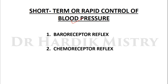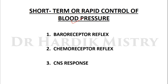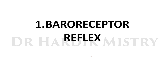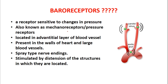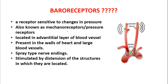In the short term mechanisms or rapid control of blood pressure, there are three mechanisms: baroreceptor reflex, chemoreceptor reflex, and CNS response. First we begin with the baroreceptor reflex. Before we learn the baroreceptor reflex, we must know about the baroreceptors.